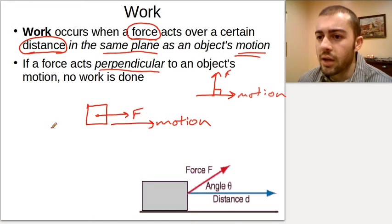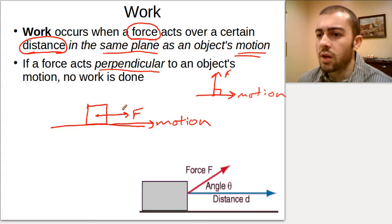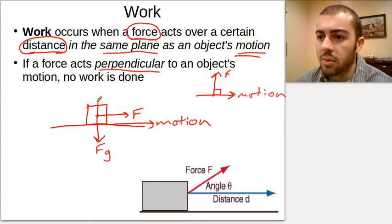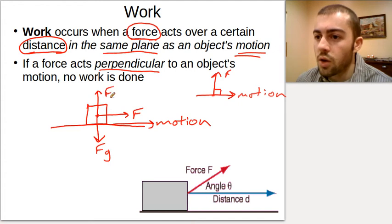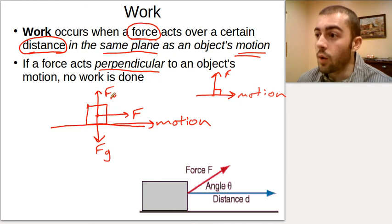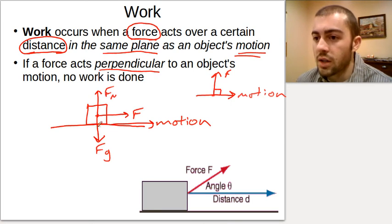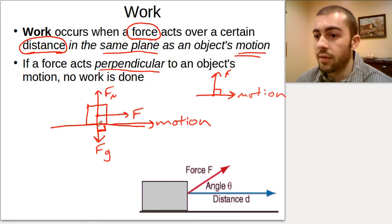Let's think about what other forces act on that box. Gravitational force acts downwards, and normal force is the force of a surface pushing back on the object. Would these forces be doing work? The answer is no — gravity is not doing work here because gravity is perpendicular to the object's motion. The motion is to the right, gravity is straight down; those are perpendicular to each other, so no work is done.